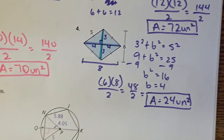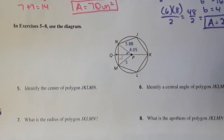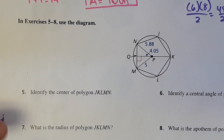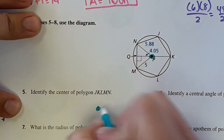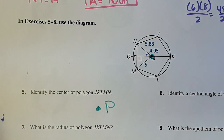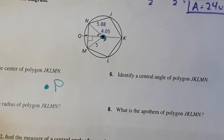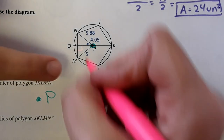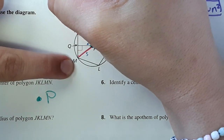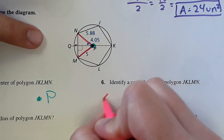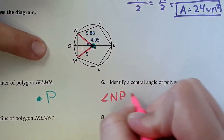Now this part brings in some vocabulary — some of it we know, some we don't. It says identify the center of polygon JKLMN, talking about this pentagon here. The center is right here at point P. Then it says identify the central angle of the polygon. A central angle goes from the center to a corner and then center to the next corner. This would be the central angle right here — angle NPM.